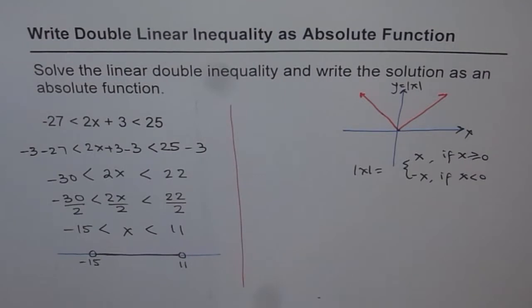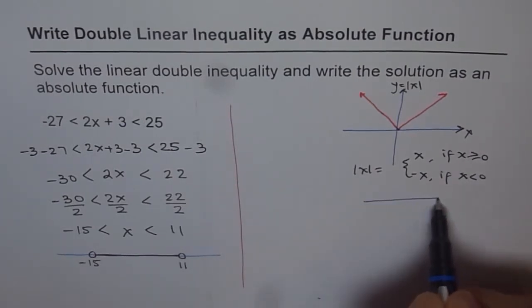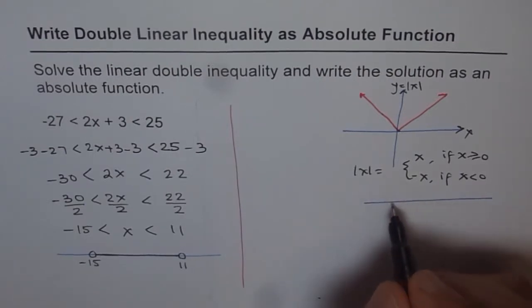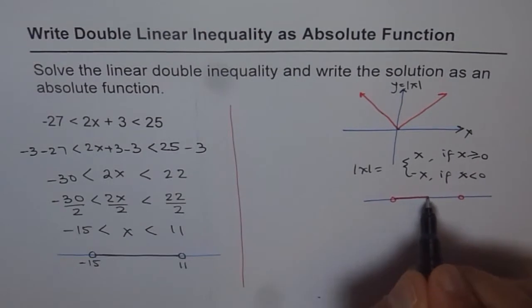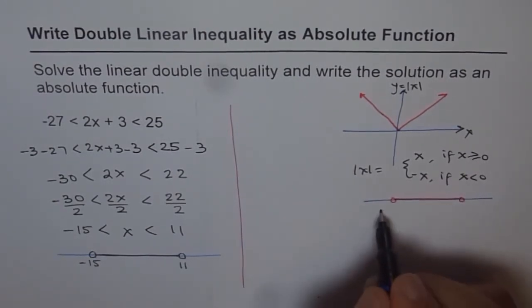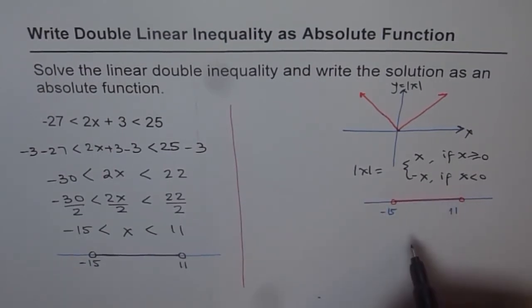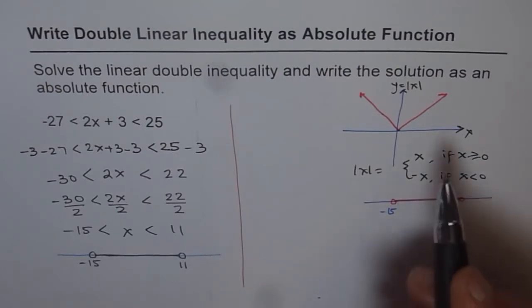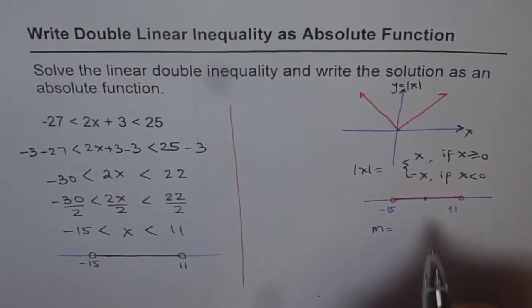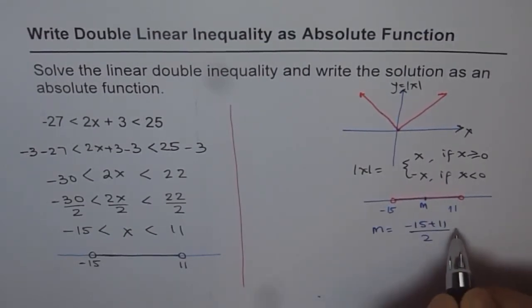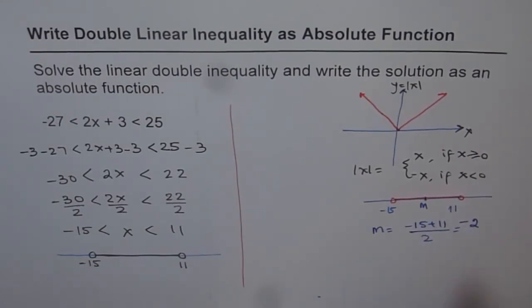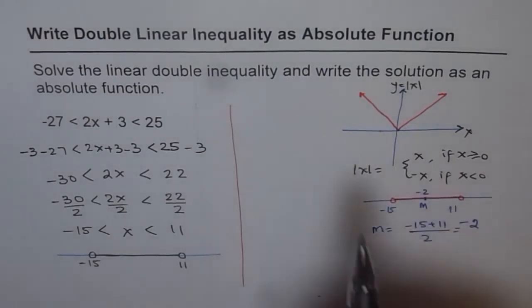Let me draw the number line again. The solution we're looking for lies between minus 15 and 11. To express this as an absolute function, we find the midpoint of these two values. The midpoint n equals minus 15 plus 11 divided by 2, which is minus 4 divided by 2, giving us minus 2. So the absolute function has moved two units to the left — it's transformed.